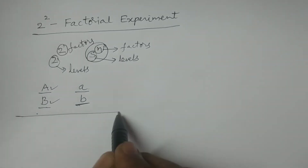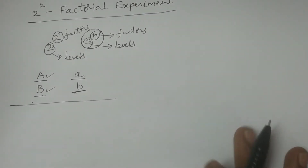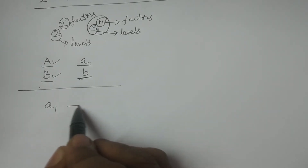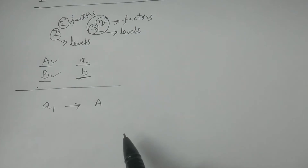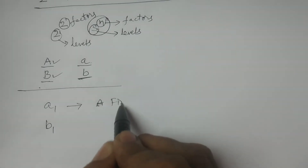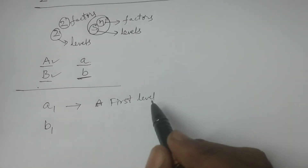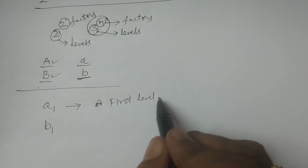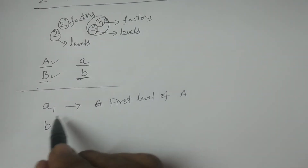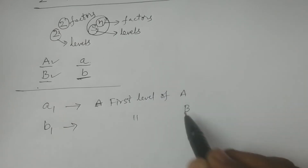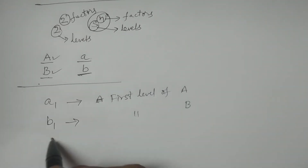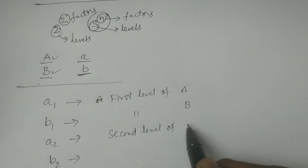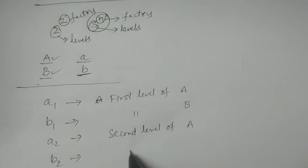Based on this knowledge, consider A1 — this is the 1st level of factor A. And B1 is the 1st level of factor B. Similarly, A2 is the 2nd level of factor A, and B2 is the 2nd level of factor B.